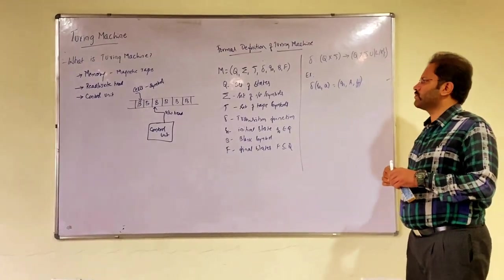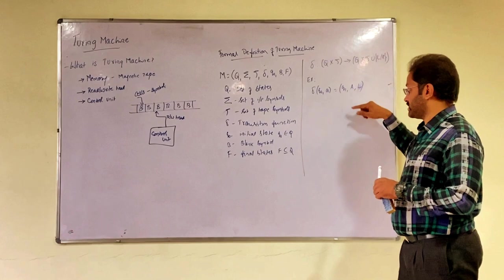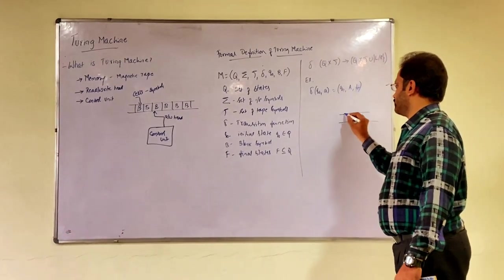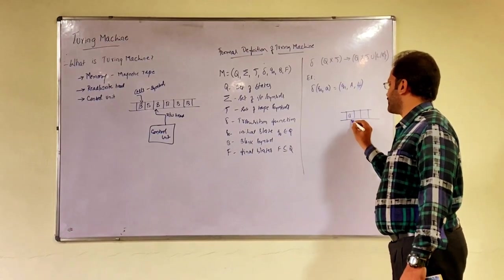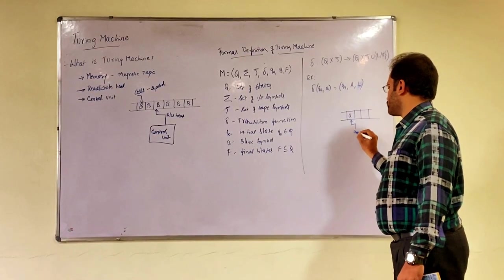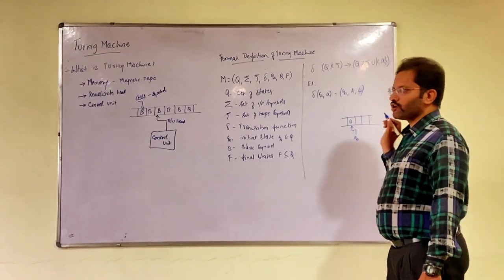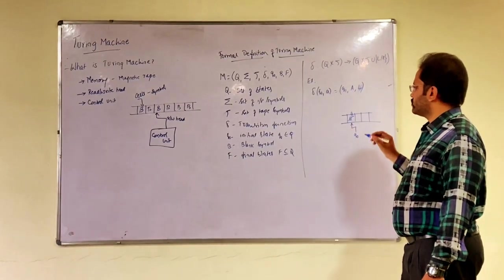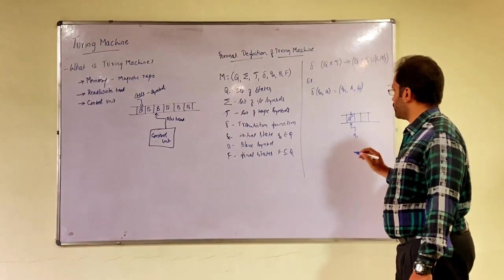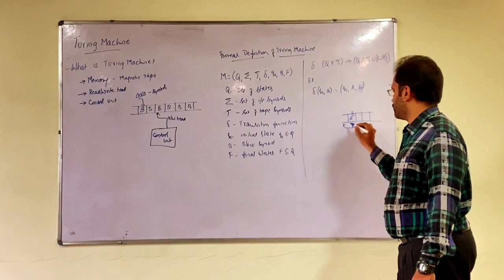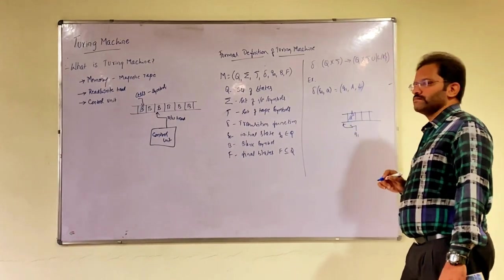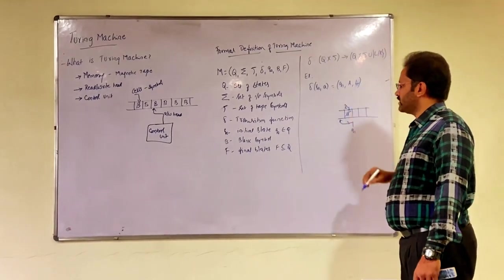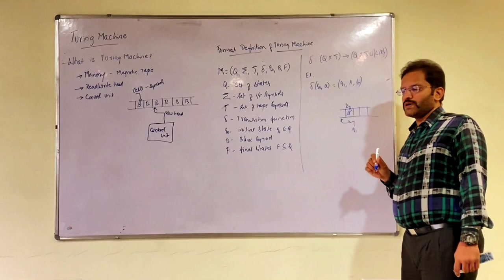If you write like this, what it says or what it specifies? It says if there is a tape, a Turing machine where you have a symbol A and Turing machine is in state Q0, then when you encounter A, replace A by uppercase A, change the state to Q1 and move towards left. It was pointing here earlier, replace A by uppercase A, then you are moving towards left.